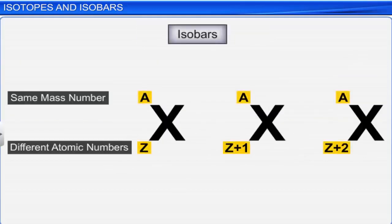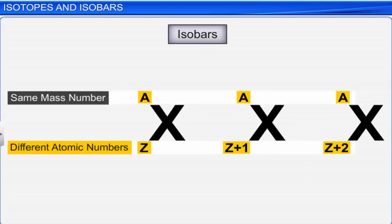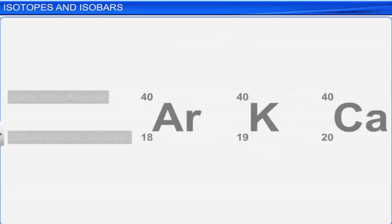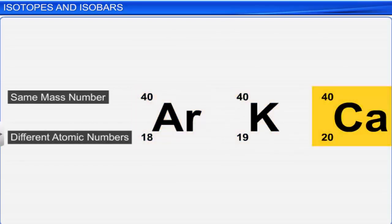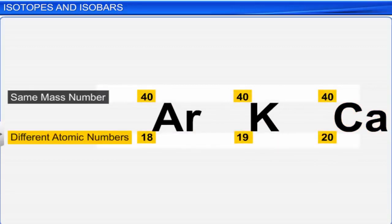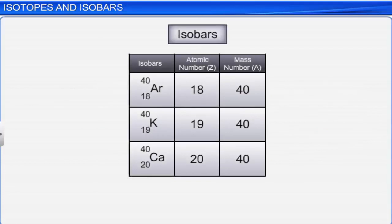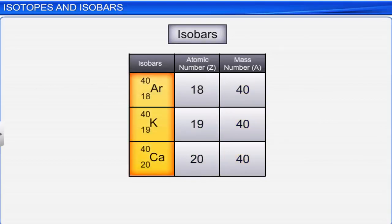Some atoms of different elements are found to have the same mass number but different atomic numbers. For example, ¹⁸Ar⁴⁰, ¹⁹K⁴⁰, and ²⁰Ca⁴⁰ have the same mass numbers but different atomic numbers. Such atoms of different elements, having different atomic numbers but the same mass numbers, are called isobars. Isobars have different chemical properties because they have different atomic numbers.